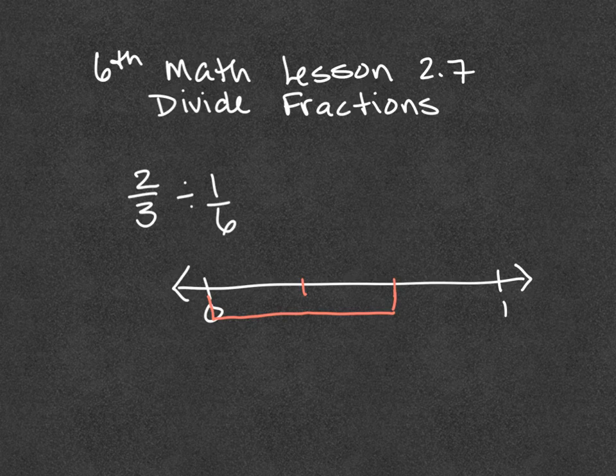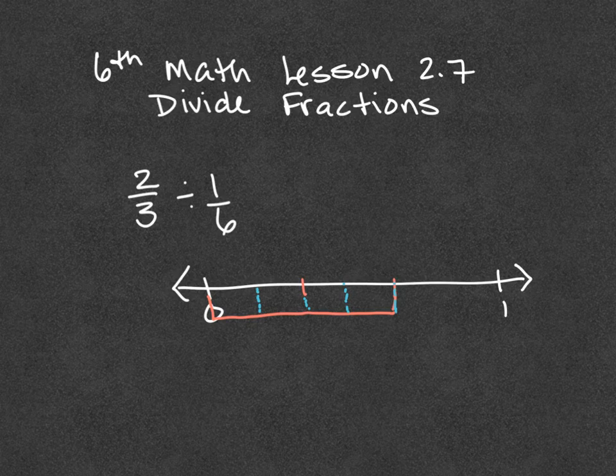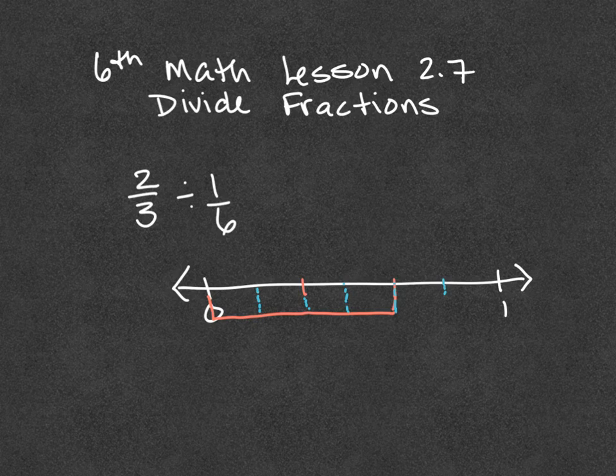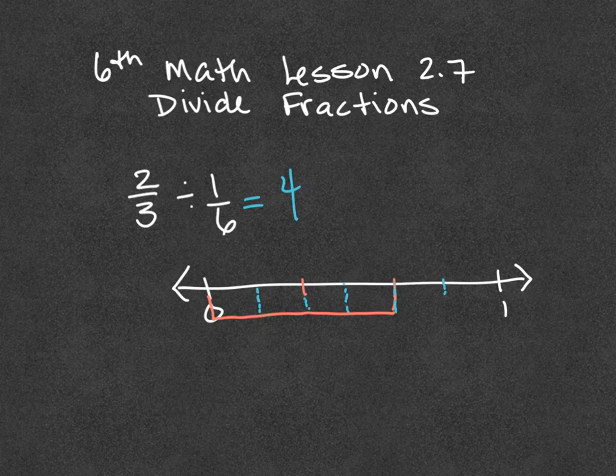So we're splitting this into sixths: 1, 2, 3, 4, 5, 6ths. 1, 2, 3, 4, 5, 6ths equal pieces. How many 1/6ths does it take to fill 2/3? 1, 2, 3, 4. So this kind of feels like more of that modeling of the division. But it was good for you guys to see one more time.